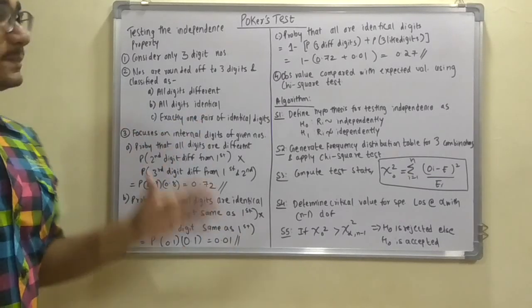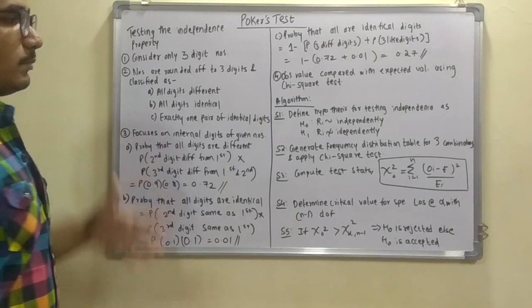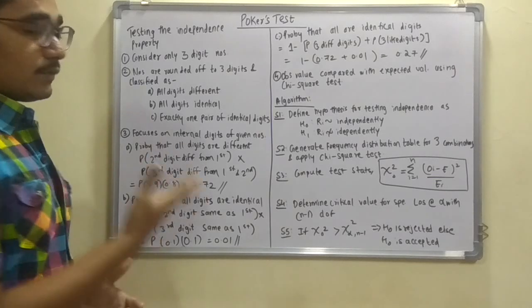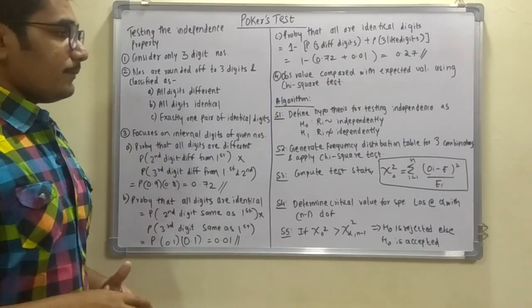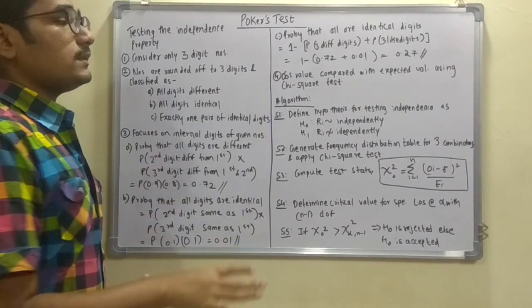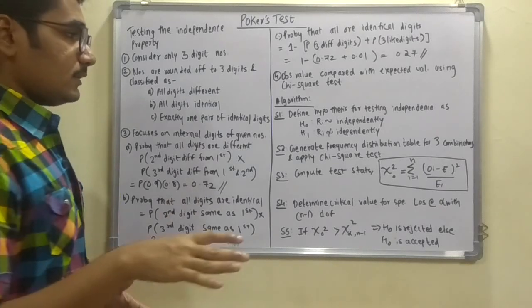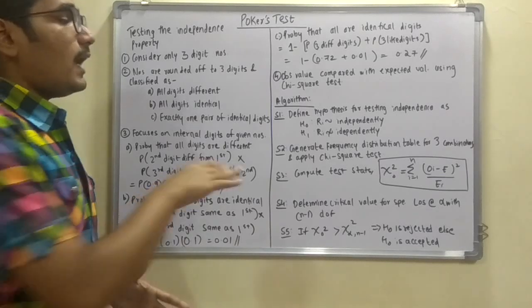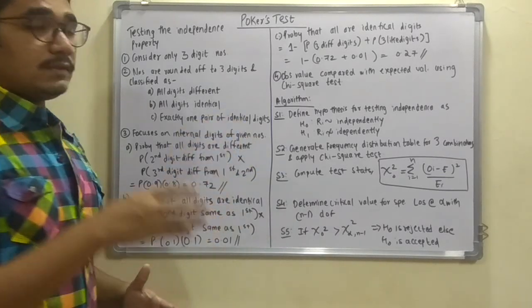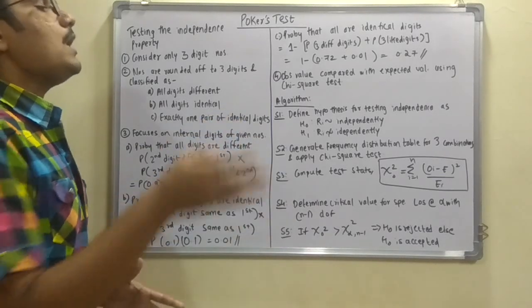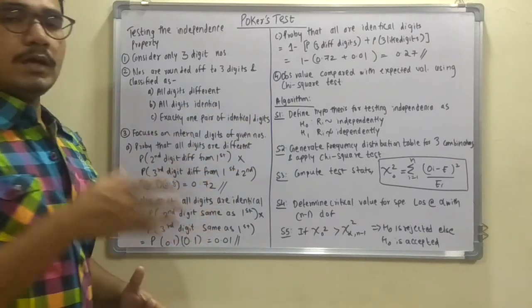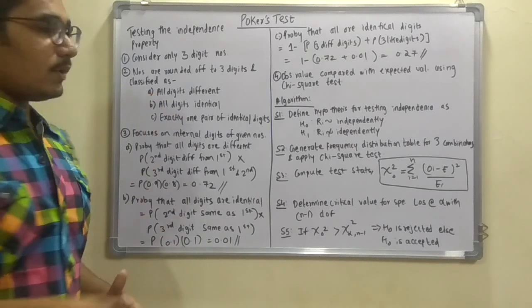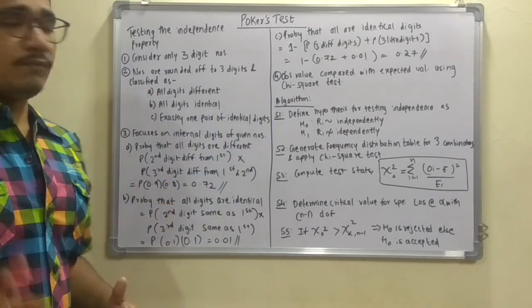This was all about the concept regarding the Poker's Test in simulation modeling. Now let us move on to the algorithm. Basically there are simply five simple steps for solving this Poker's Test. First of all you have to define the hypothesis for testing the independence. H0 is a hypothesis that Ri, that is random numbers, are independently distributed. And H1 is a hypothesis that Ri are not independently distributed. In my earlier simulation modeling videos these steps remain the same.